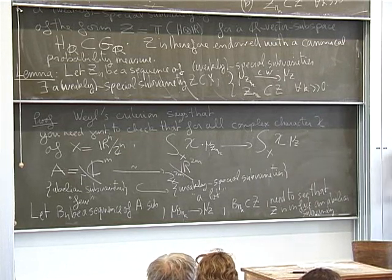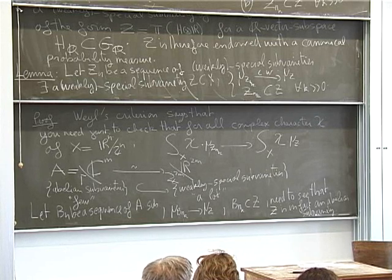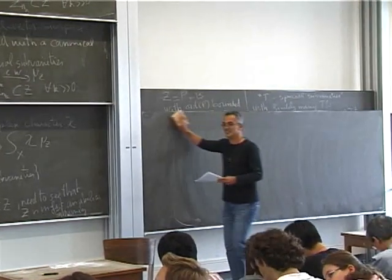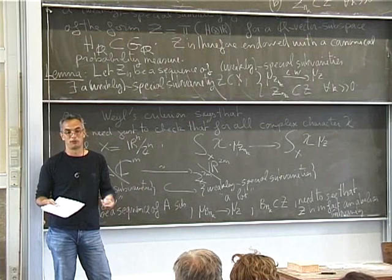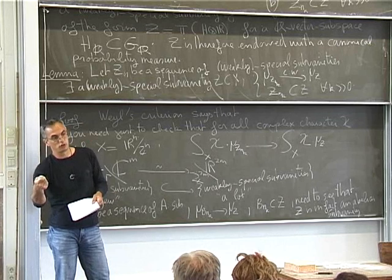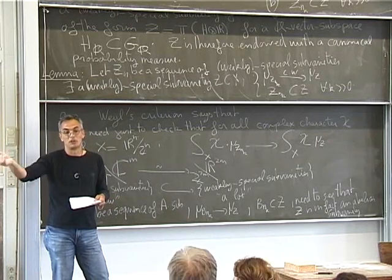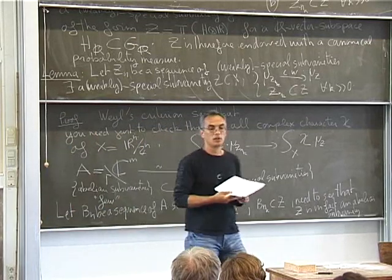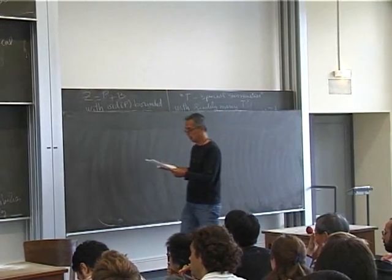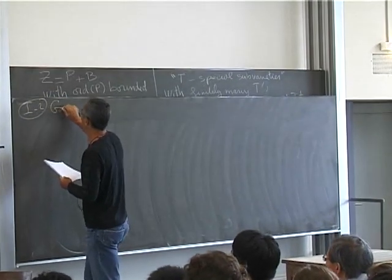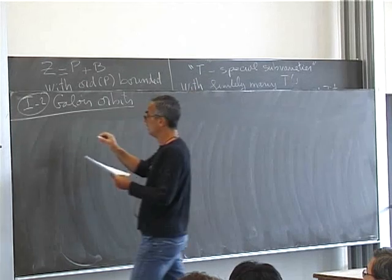Now I explain the Galois part and how to combine it with equidistribution for the abelian variety case. A question arose about the notion of weak convergence: for any continuous function F on X, the integral of F against the measure on Z_{n_k} tends to the integral of F against the limit measure. This is harder in the Shimura variety case because the space is not compact. From now on, K will be a number field and A is defined over K.